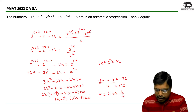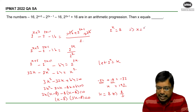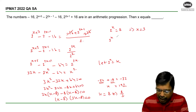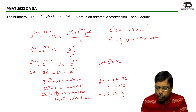Now, if I consider k, which is 2^x, equals 8, I get the value of x as 3. And if I consider 2^x equals 8/3, this will result in x being an irrational value. So, hence the value of x is 3.